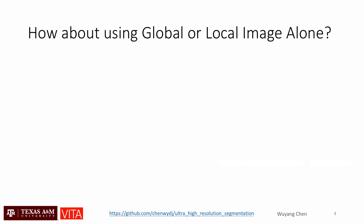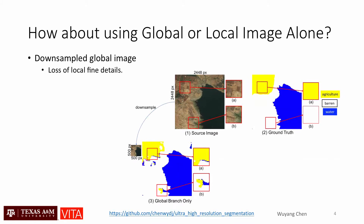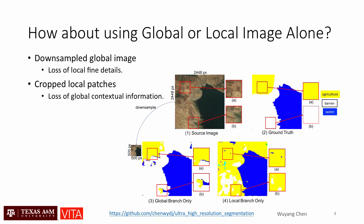With limited GPU memory, two ad-hoc ideas are downsampling the global image or cropping it into patches. However, we can observe that models trained with downsampled global images suffer from blurring artifacts due to missing details. In comparison, models trained with patches lack neighborhood dependency, making it difficult to distinguish visually similar regions.